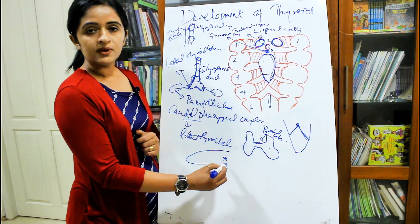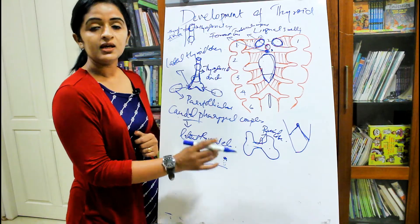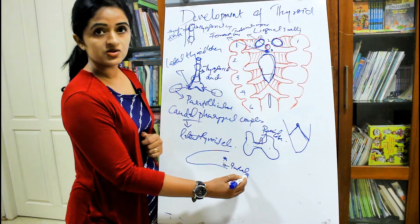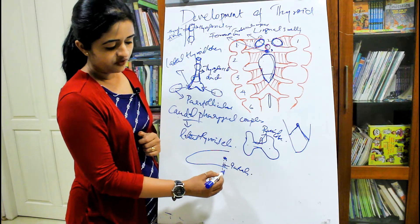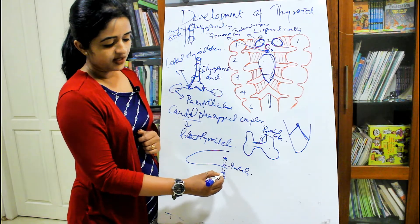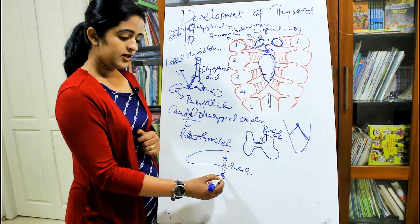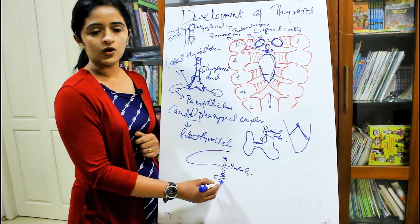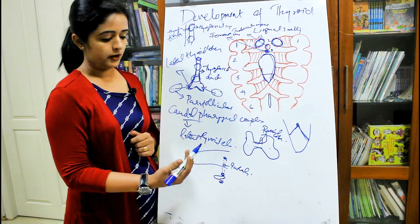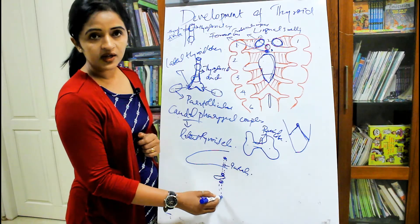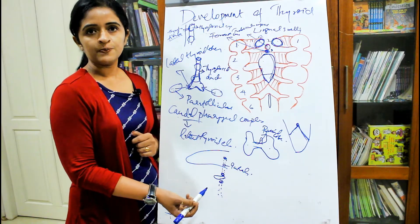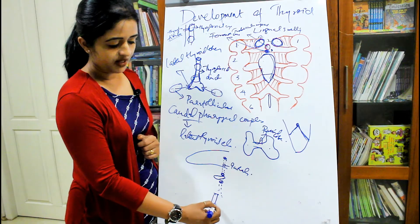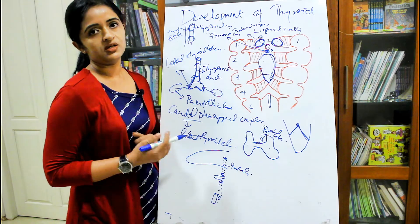If the downgrowth starts but gets arrested within the muscles of the tongue, it is called intralingual thyroid. If it grows further but is arrested above the hyoid bone, it is called suprahyoid thyroid. If it is arrested just below the hyoid bone, it is called infrahyoid thyroid. If it grows down into the superior mediastinum and lies behind the sternum, it is called retrosternal thyroid.